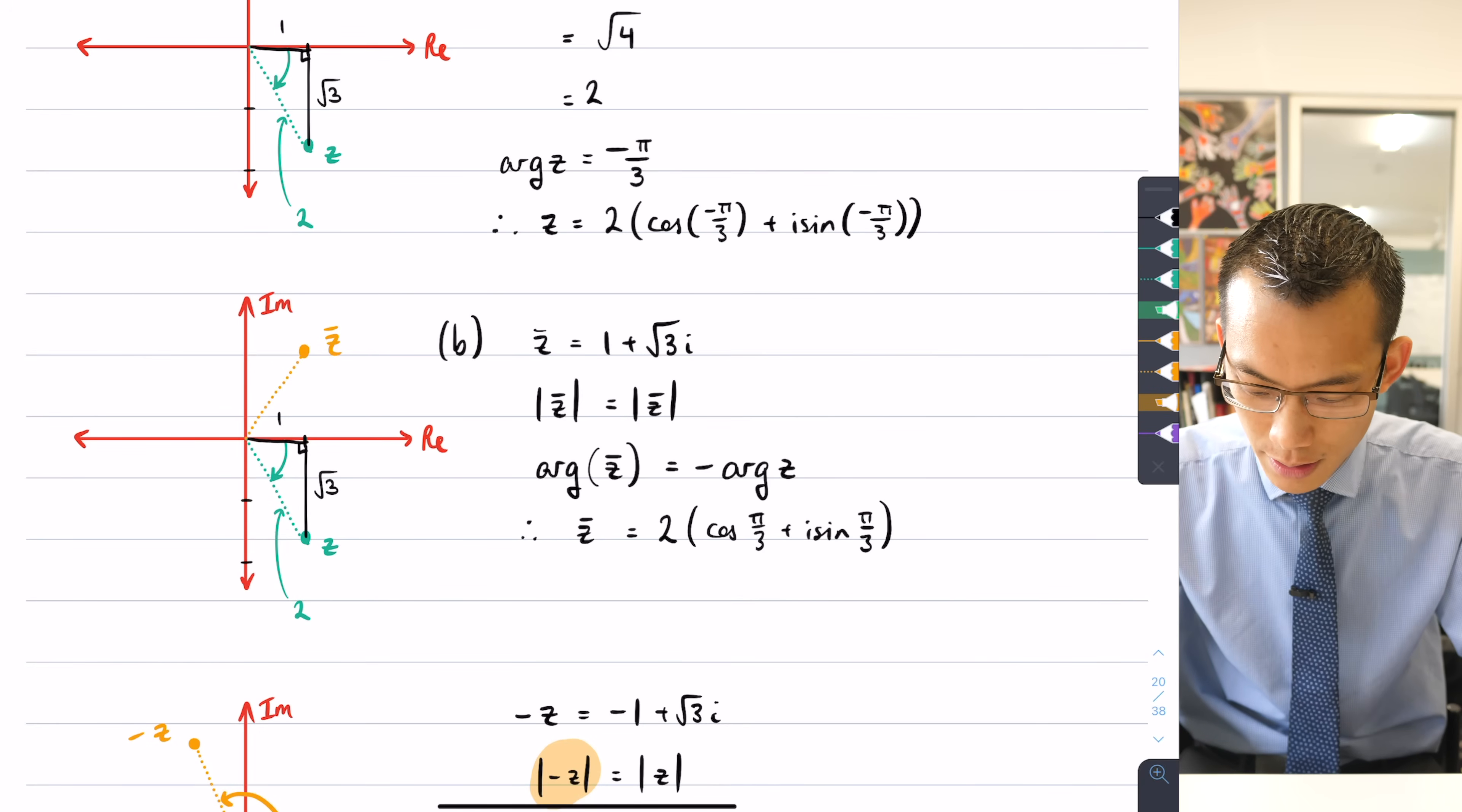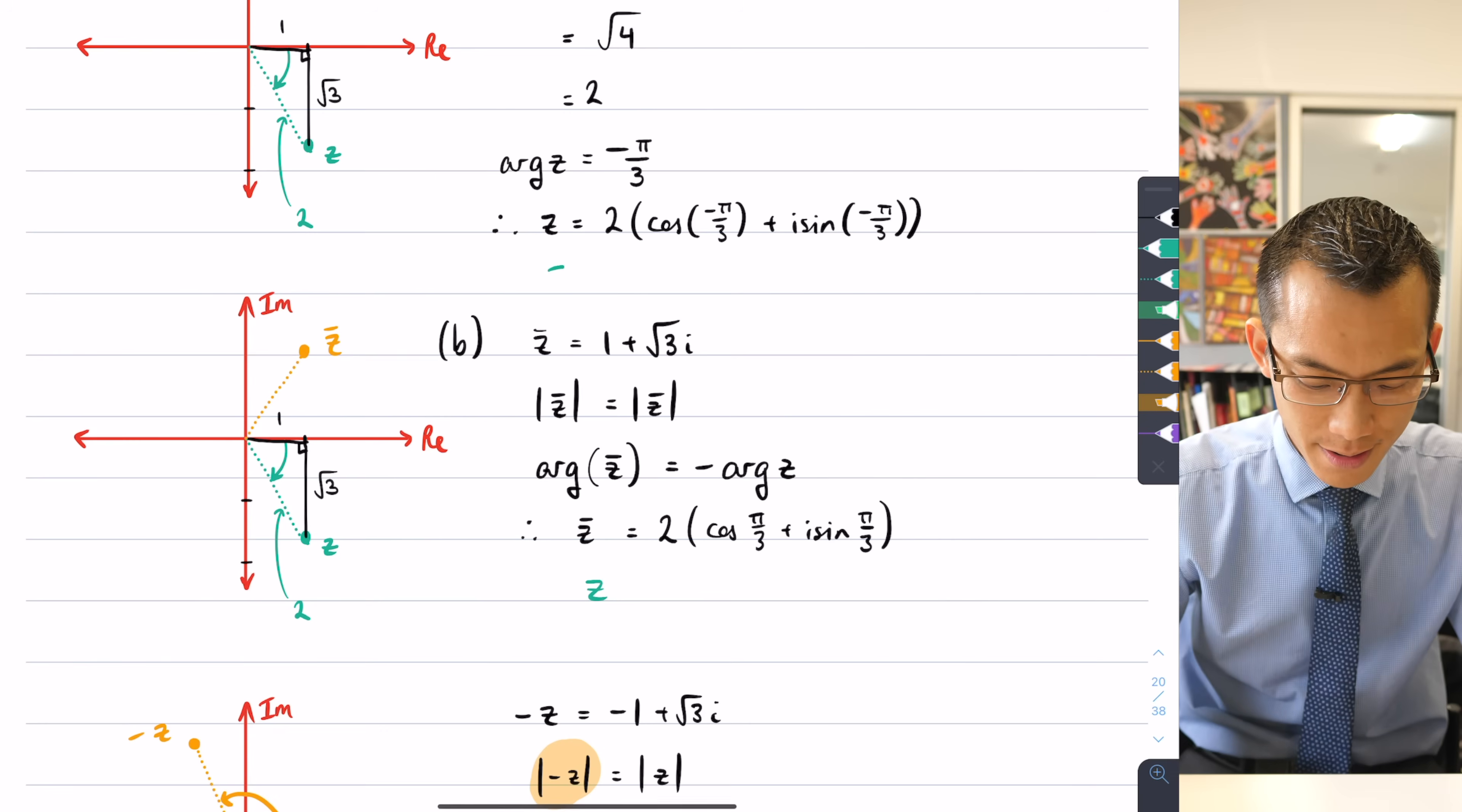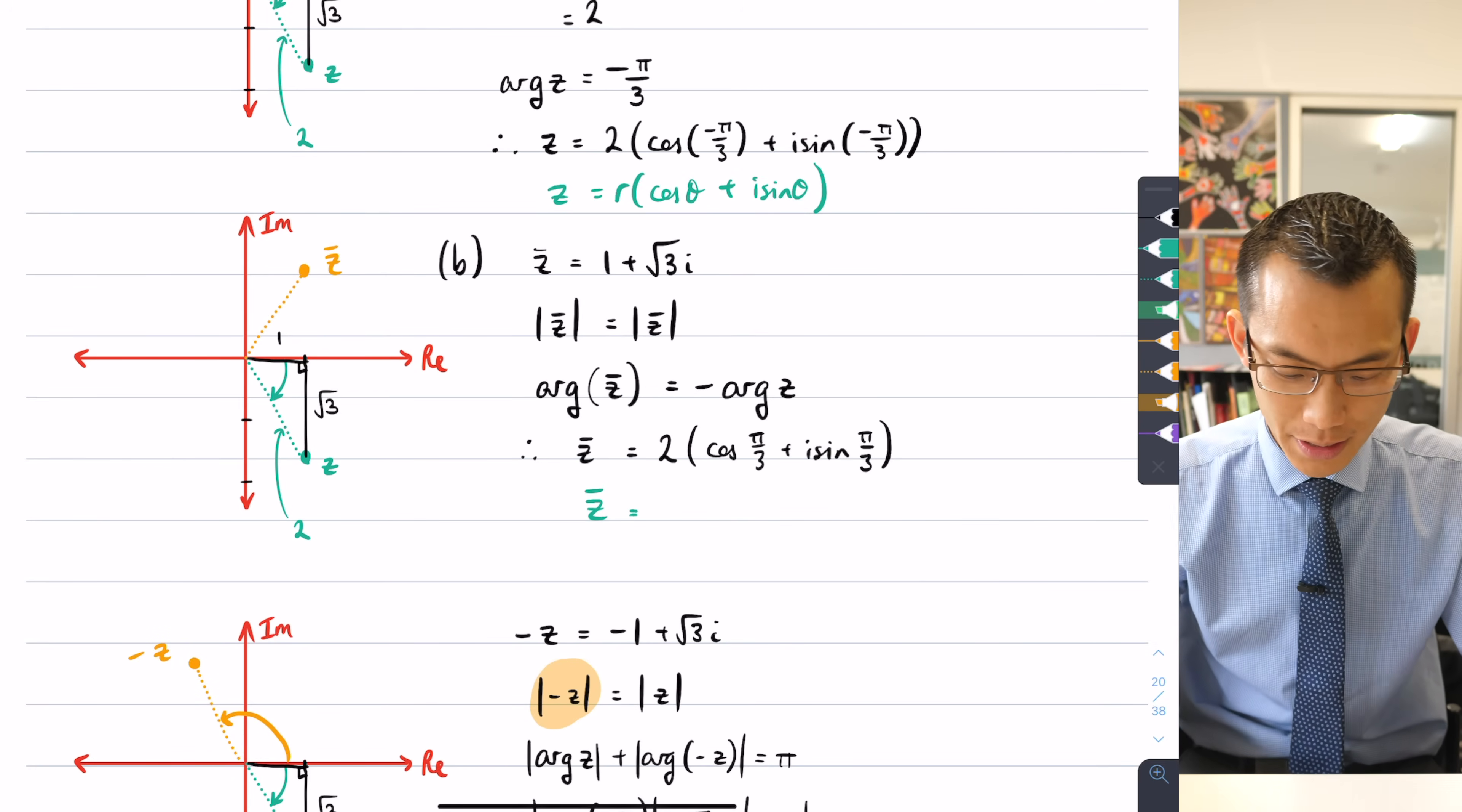I could say in general for some r(cos θ + i sin θ), like so, you're going to get for the conjugate of z, it's the same modulus,